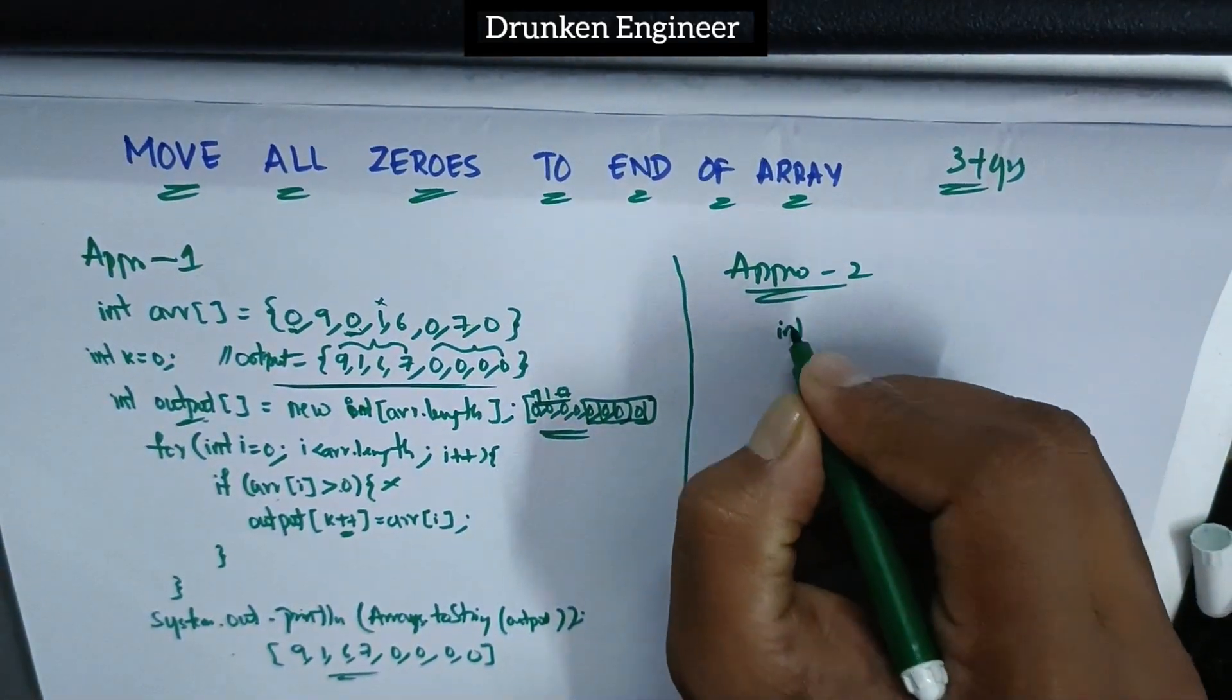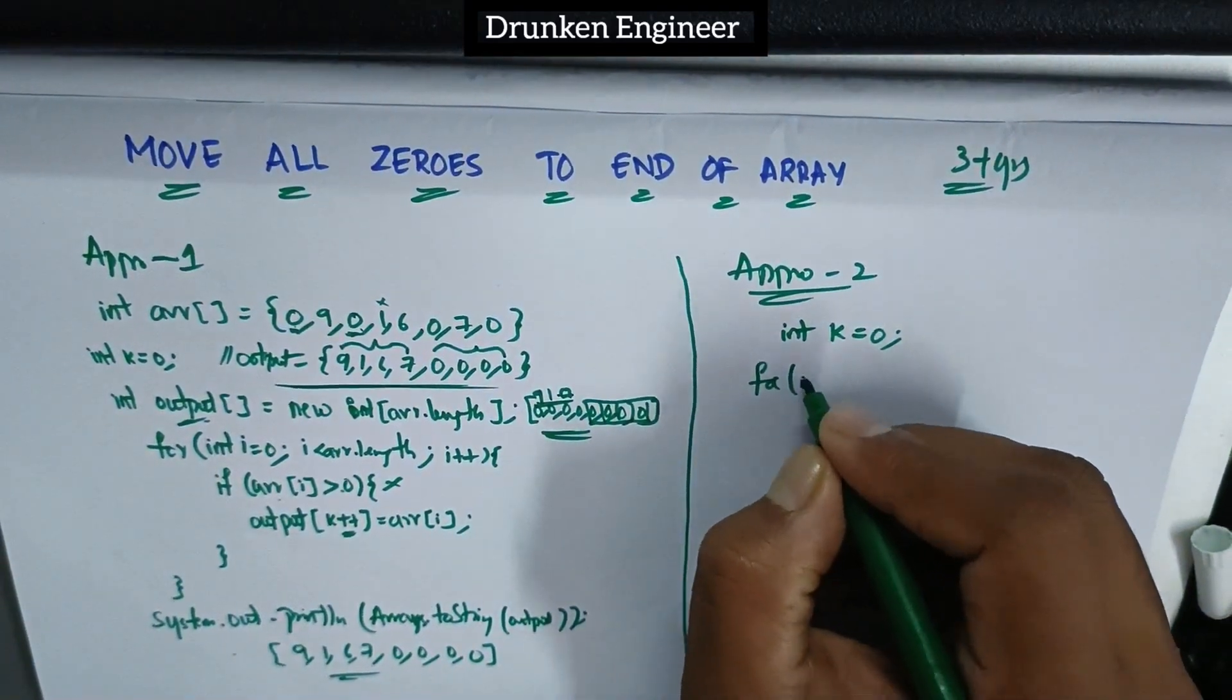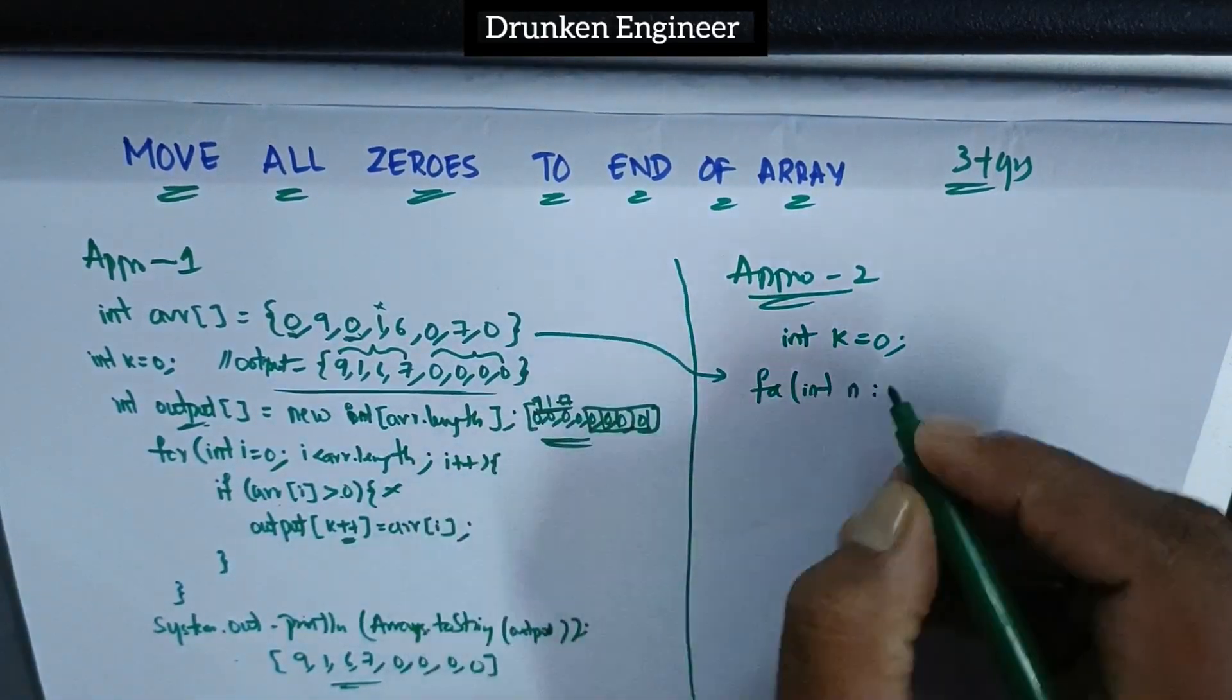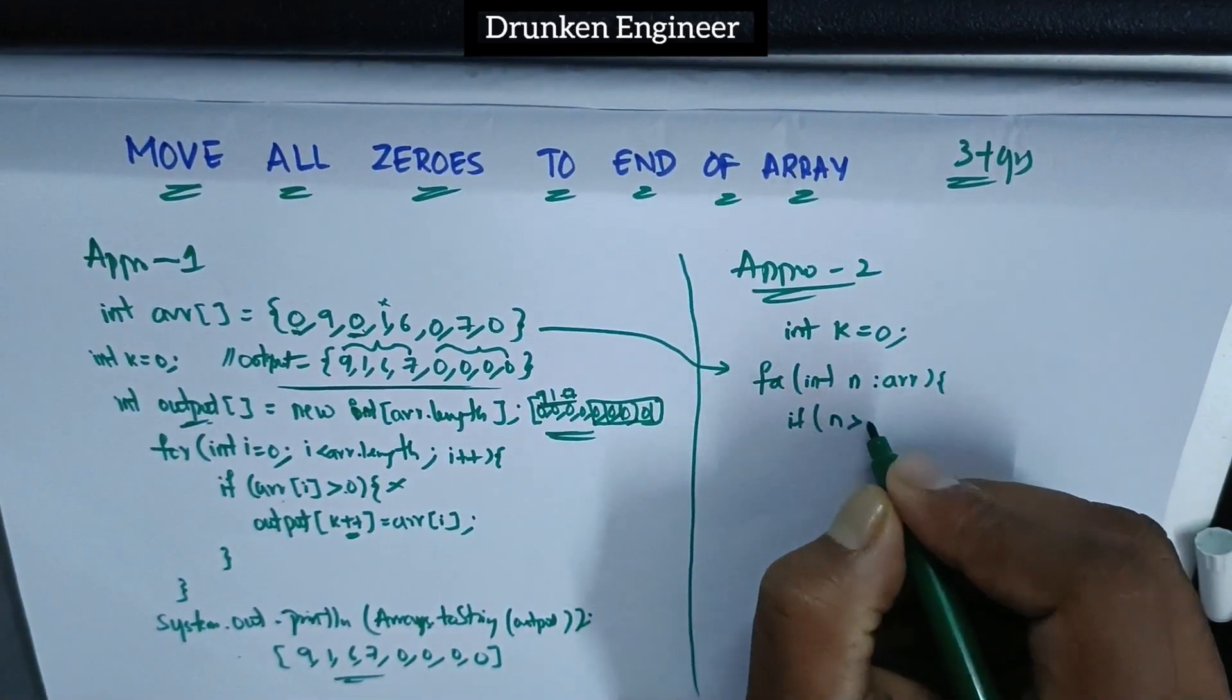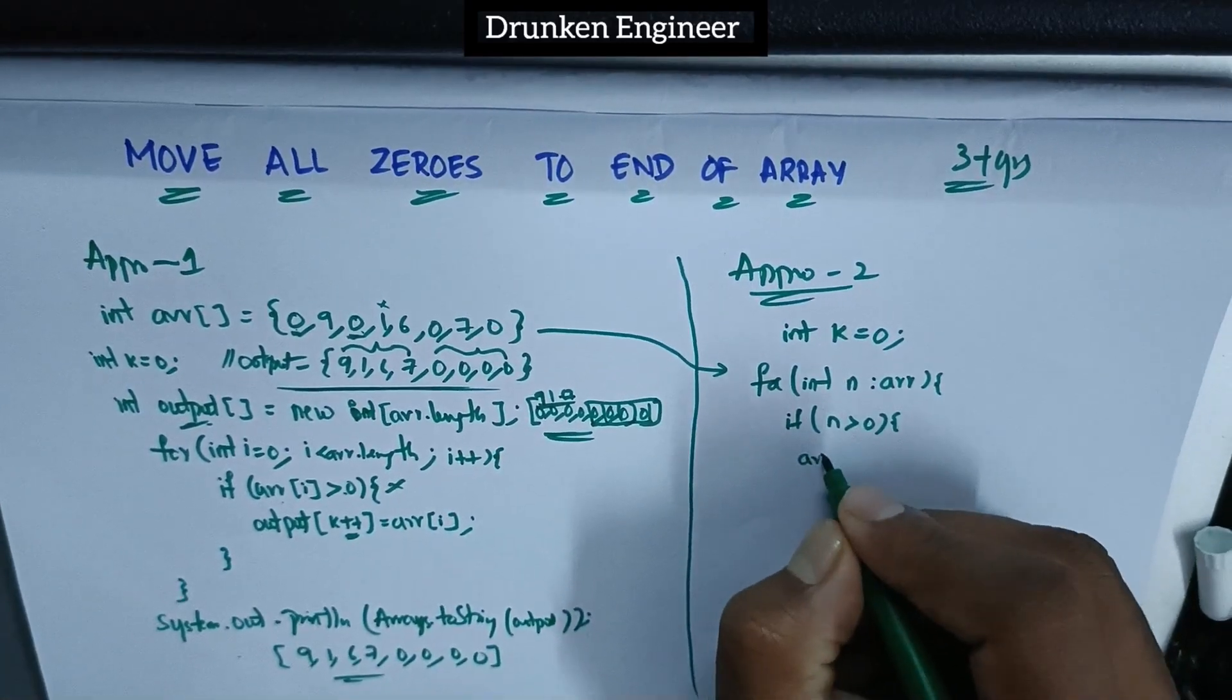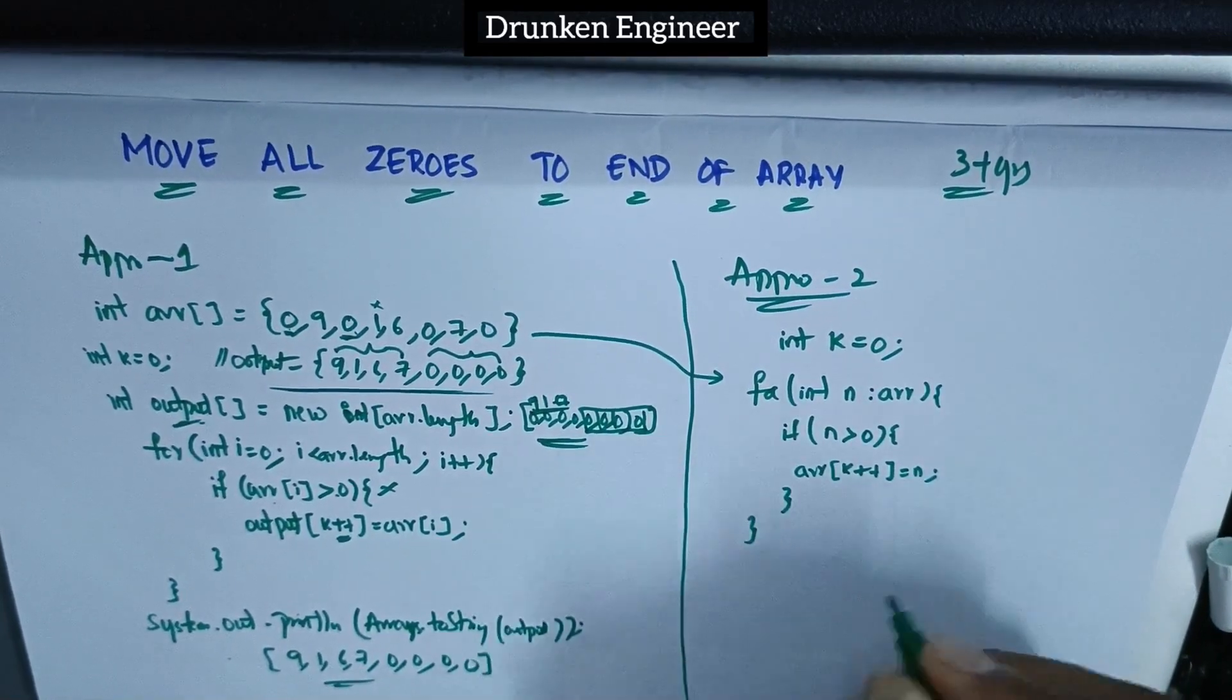So I initialized one variable int k equals zero and used an enhanced for loop: int n for array, and if n is greater than zero, in the same array at the k position I insert n. That's it.